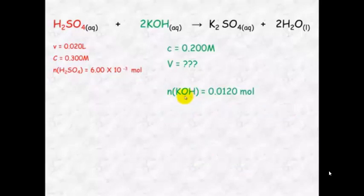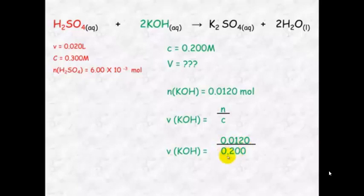Use your number of moles here and you know the concentration so you can calculate the volume of the potassium hydroxide. Volume equals number of mole divided by concentration which equals 0.0120 divided by 0.200 which equals 0.06 liters which you can convert into mLs to get 60.0 mL.